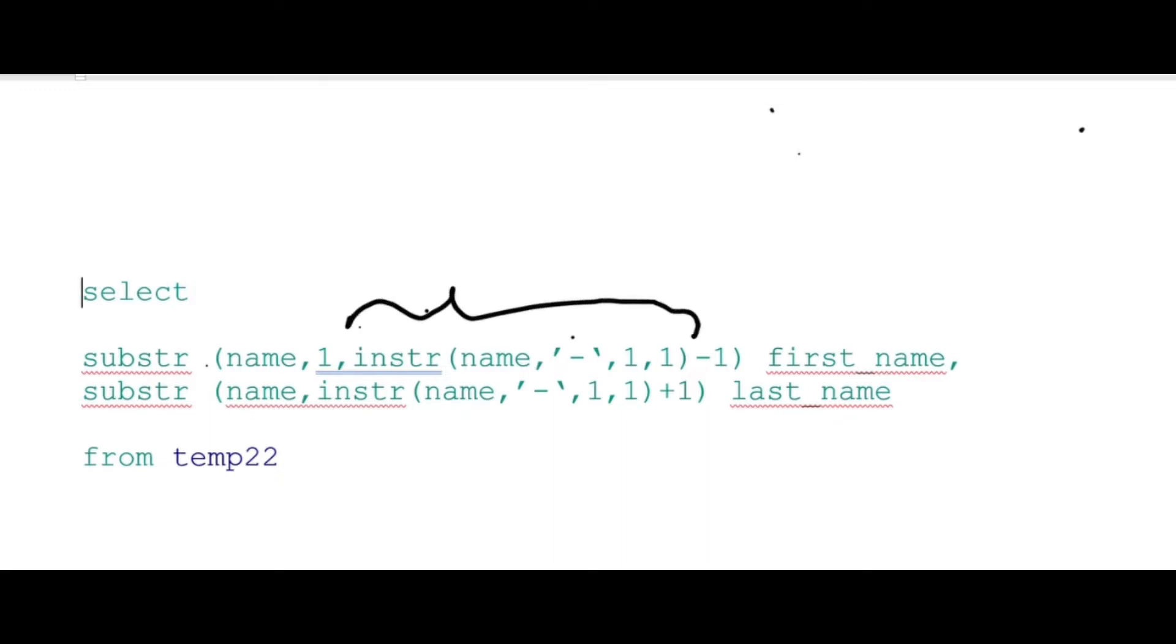Say we have a name John-Oliver. The first occurrence of the hyphen here is at the fifth position. If we subtract one from there, we get the fourth position. So from the SUBSTR function, it's extracting the characters from first to fourth position. That's how we extract our first name.